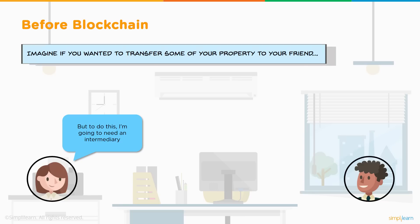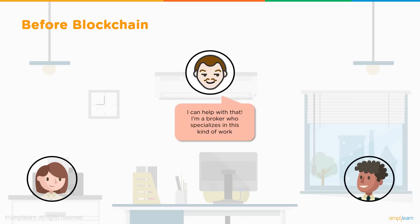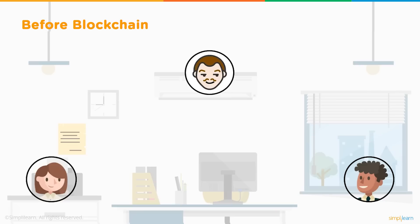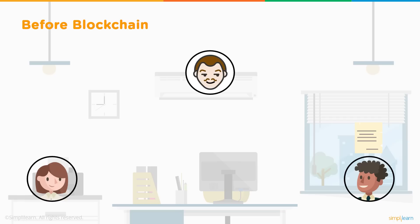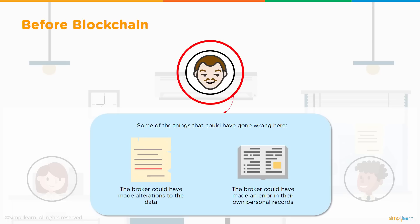Before blockchain came into the industry, let's see how typical transactions used to happen. Let's take an example of a property transaction. When two parties have to do a transaction of property, which is a very high value transaction, there always used to be an intermediary involved — a broker who facilitates the transaction between the buyer and the seller, managing and verifying all the documents.